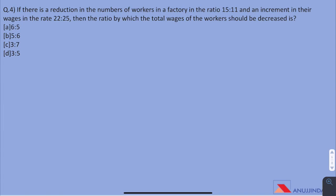Question 4. If there is a reduction in the number of workers in a factory in the ratio 15 is to 11 and an increment in their wages in the rate 22 is to 25, then the ratio by which the total wages of workers should be decreased is. For questions where two scenarios are given in initial and later format, the easiest way forward is to make a table and put down the given information systematically.